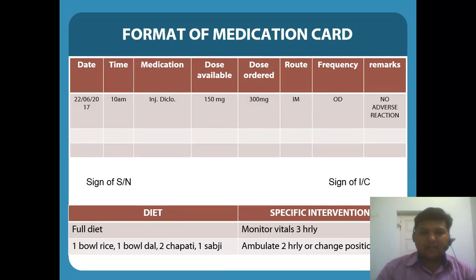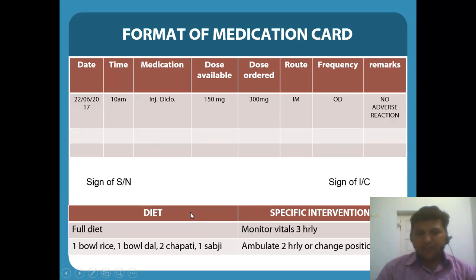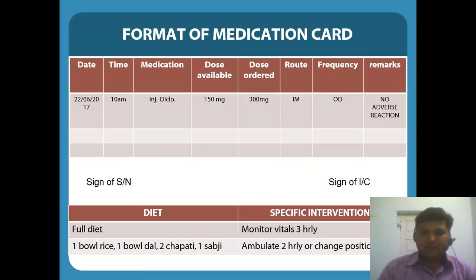The medication card should contain all the following headings: date, time of administration, name of the medication, dose of medication available, dose of medication ordered by the doctor, route of medication, frequency, and remarks for any adverse effects. It should also have the signature of the nurse who gave the injection and the signature of the in-charge nurse. On the back of the page, make two columns for diet — one for the diet ordered by the doctor and one for whatever the patient actually consumed — plus a column for specific instructions like monitoring vital signs three-hourly, ambulating, or changing the patient's position.